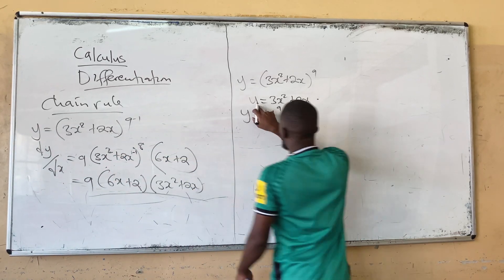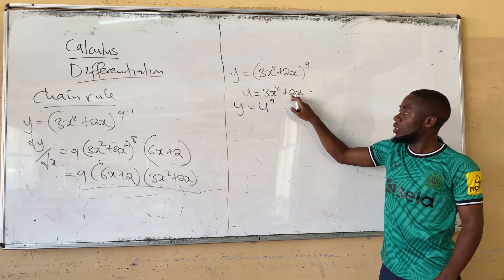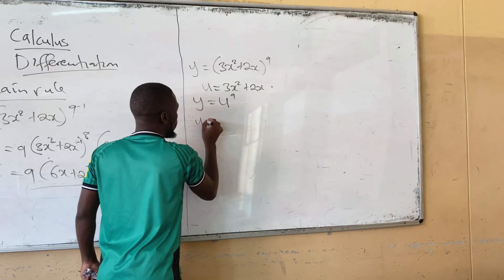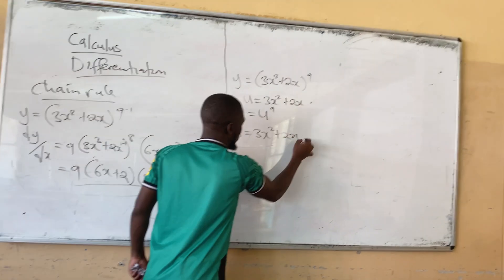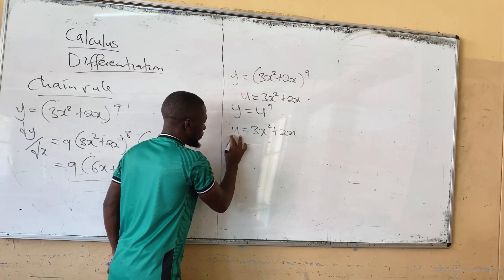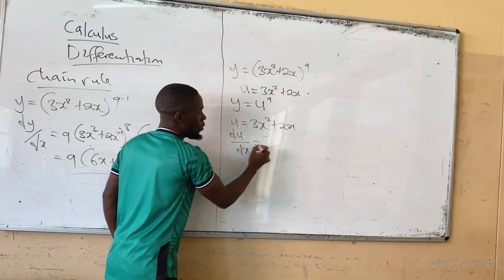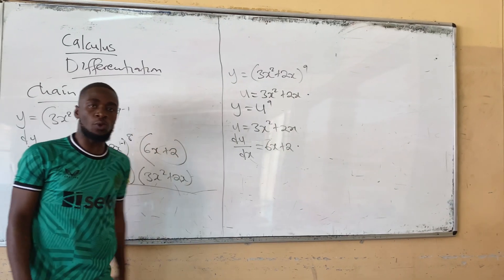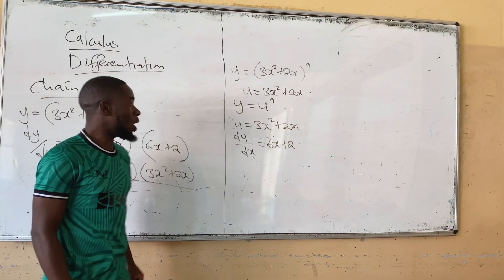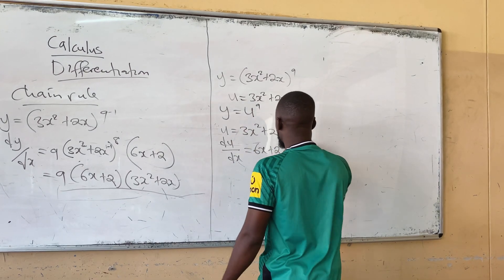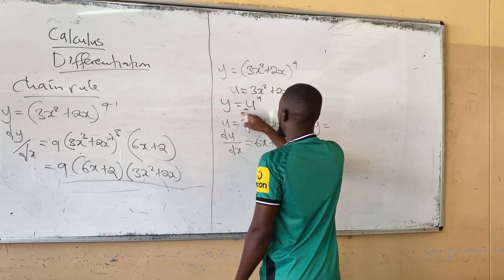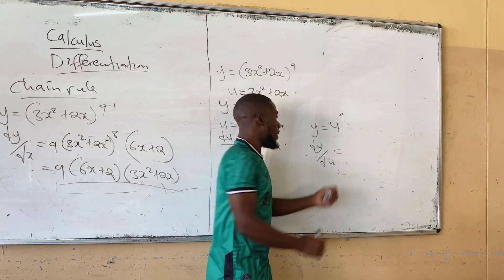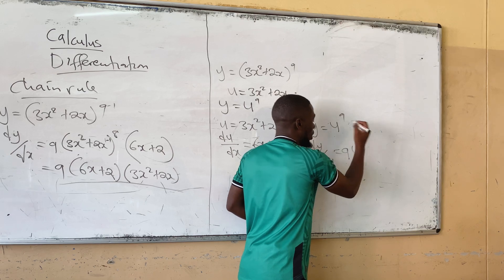The first thing we do is differentiate u with respect to x, and also differentiate y with respect to u. So: u equals 3x squared plus 2x. Differentiating gives du/dx equals 6x plus 2. Then, since y equals u to the power 9, differentiating y with respect to u gives dy/du equals 9u to the power 8.